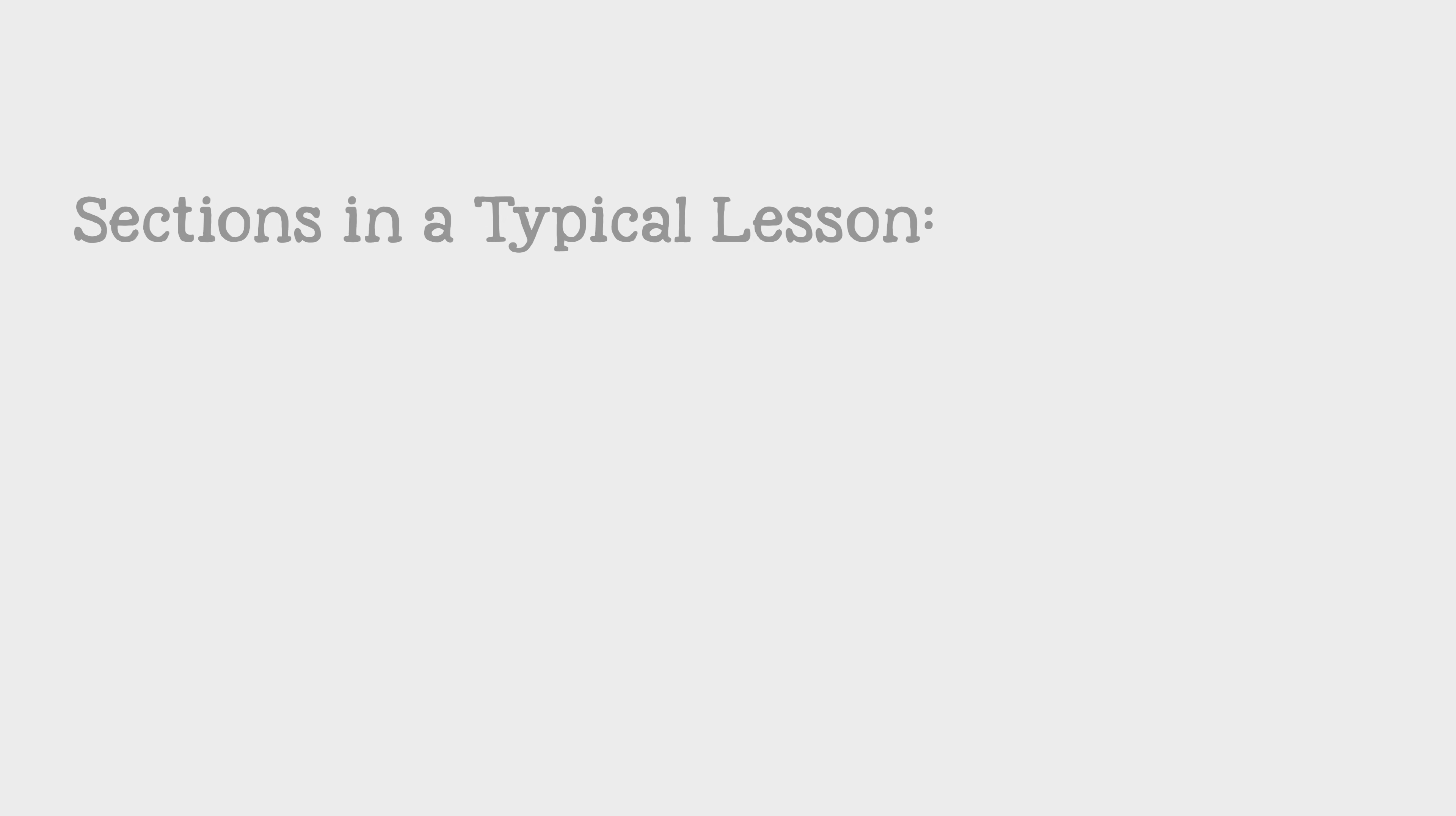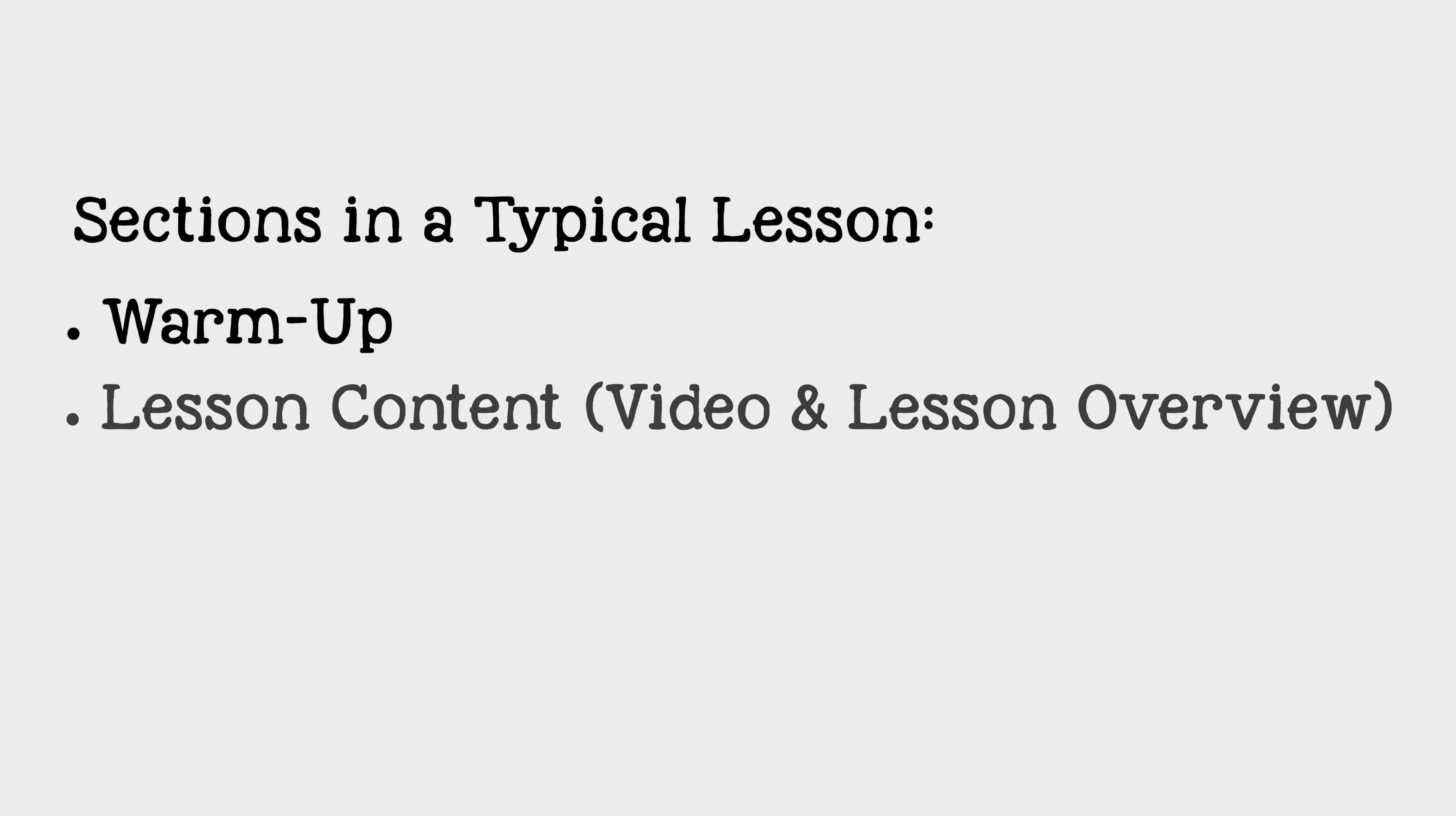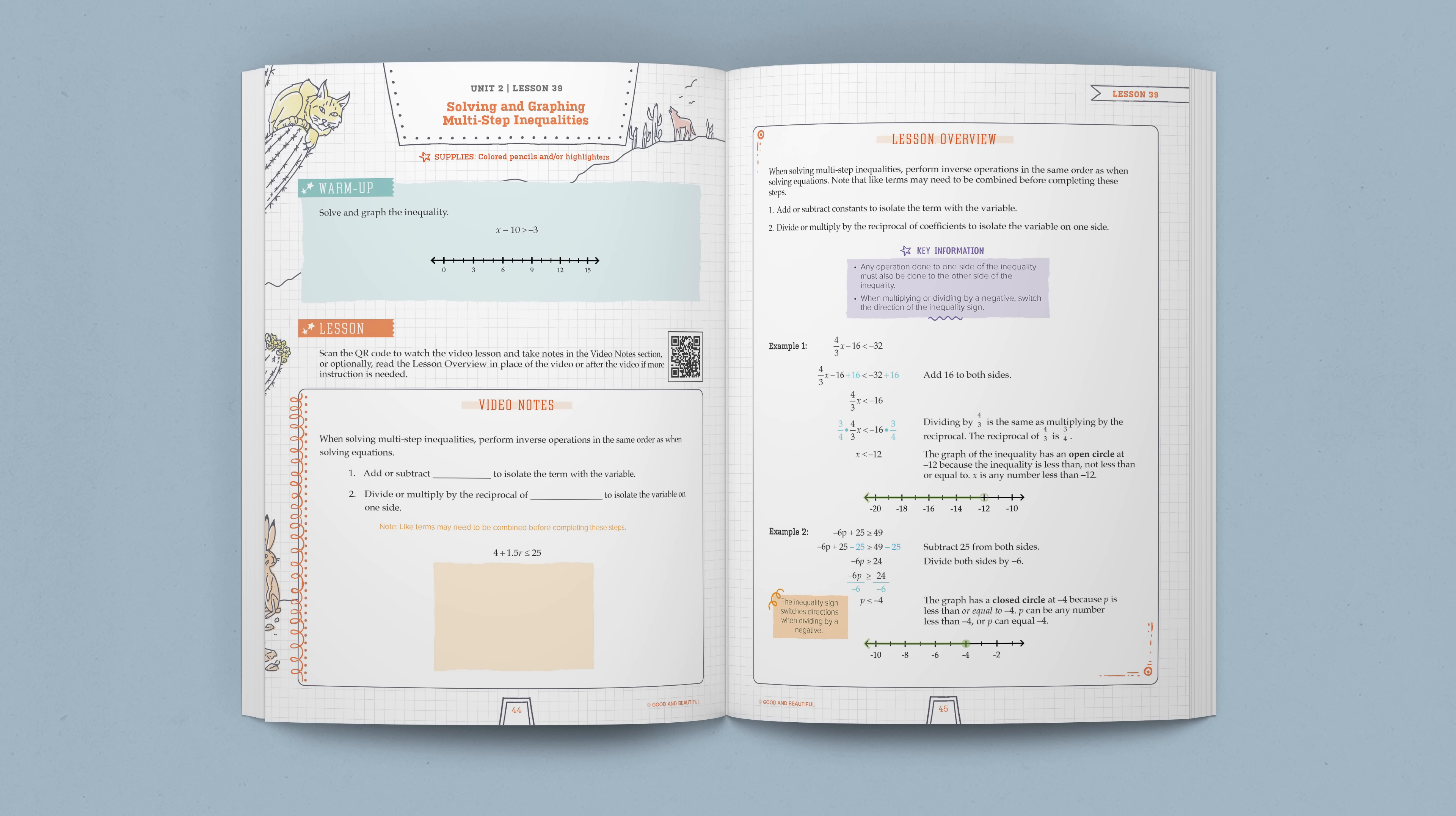Let's take a quick look at how the Math 7 lessons work. A typical lesson consists of four main sections: a warm-up, the lesson content, a practice, and a review. Here is Lesson 39, Solving and Graphing Multi-Step Inequalities. Students first complete a short warm-up, which often practices mental math skills. Then they watch the video lesson and complete a video notes section along with the instructor.